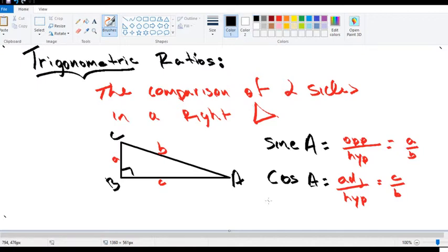And the third ratio that we will look at is called tangent, often referred to as just tan. Tangent of A is opposite over adjacent. So opposite of A, capital A, will be lowercase a. Adjacent of angle A is lowercase c. So here we have the three trigonometric ratios: sine, cosine, and tangent.